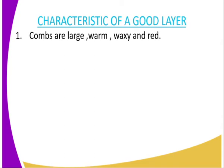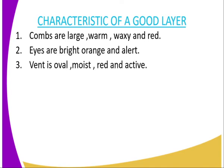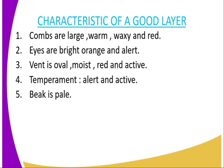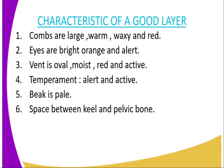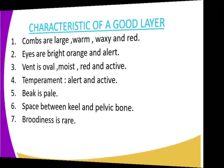Characteristics of a good layer include: number one, the comb is large, warm, waxy and red. Number two, eyes are bright, orange, and the bird is very alert. Number three, the vent is oval, moist, red and active. Number four, temperament — the bird is alert and active. Number five, the beak is pale. Number six, the space between the keel and the pelvic bone should allow two to three fingers. Number seven, broodiness is rare — good layers rarely become broody.